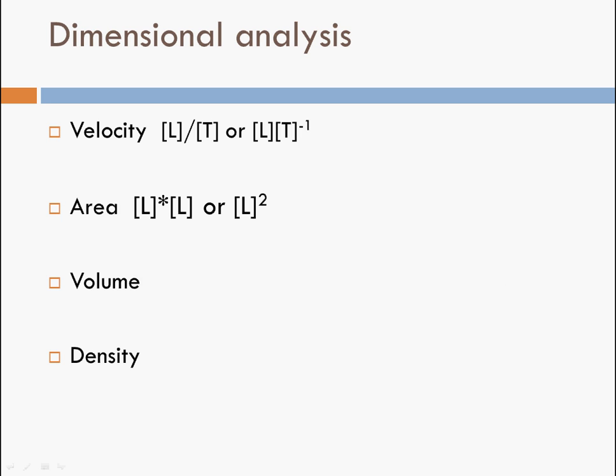So area is length times length or length squared. You're used to thinking of length times width. In this case they're both lengths, so we're keeping it in those units of fundamental dimensions. So perhaps you can see where we're going for volume length cubed. And then density is mass per volume. So that's mass divided by volume or mass times length to the negative 3 volume.